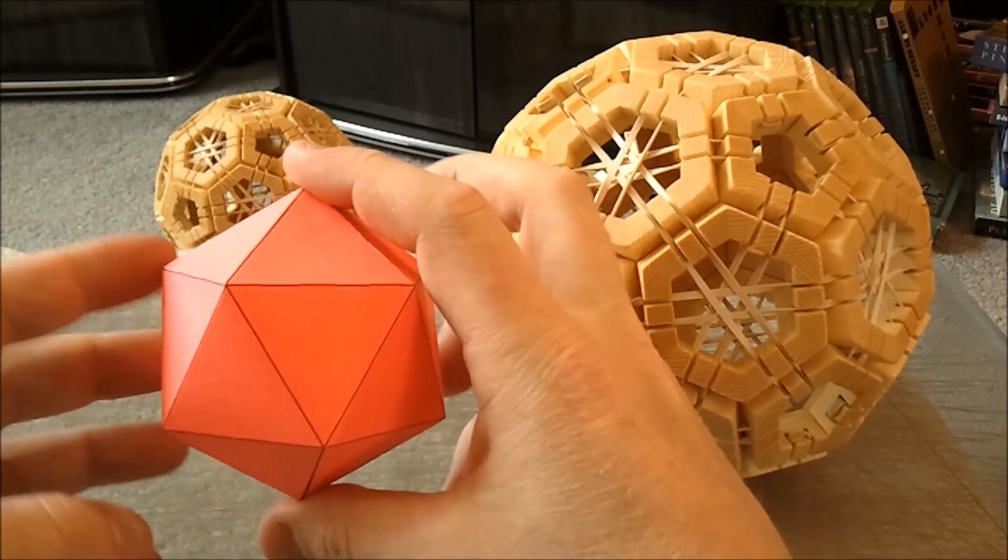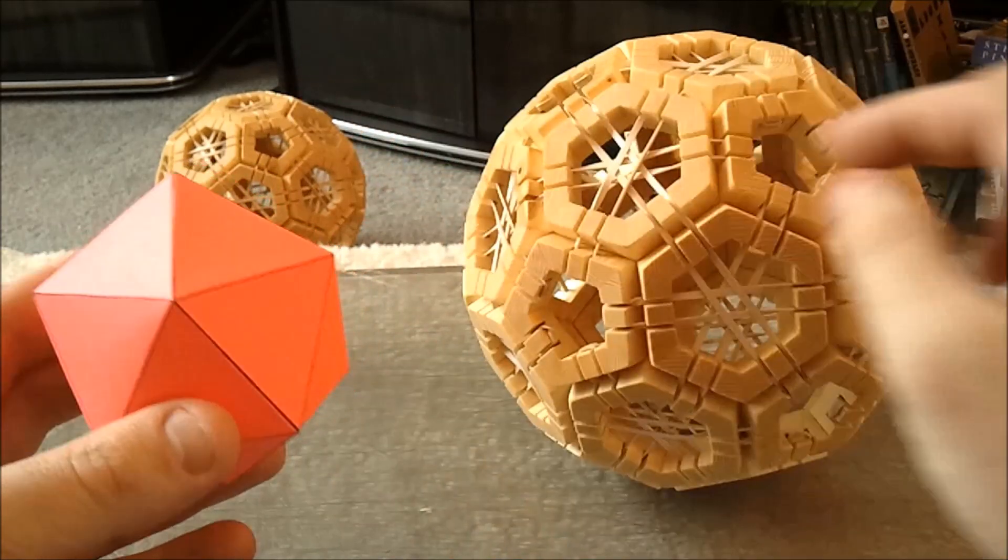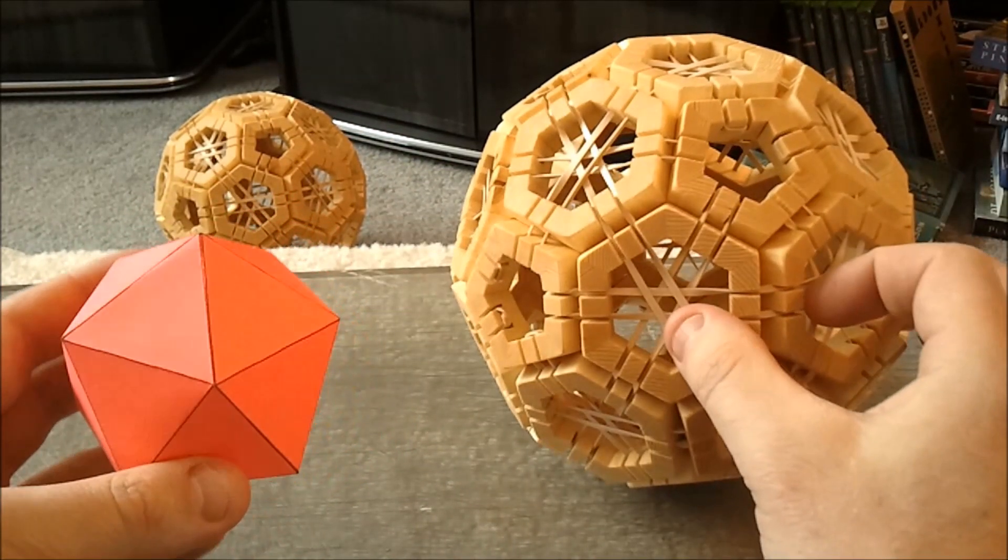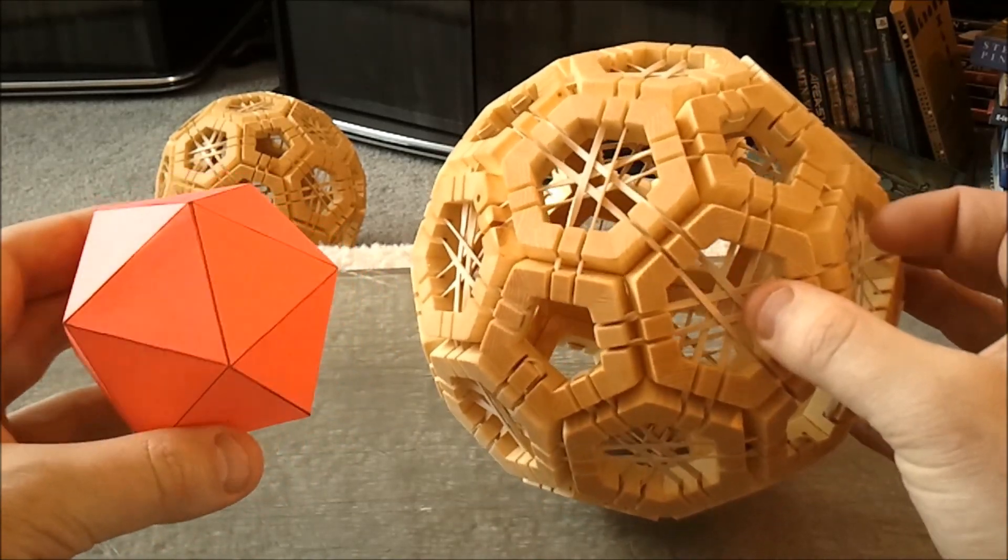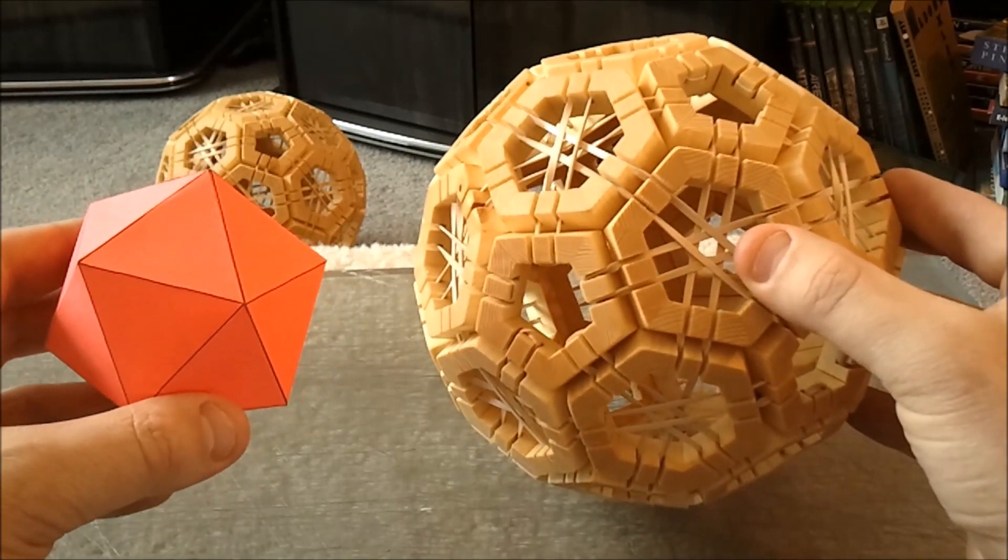This is a normal icosahedron. It has 20 faces, and each of these triangular faces correspond with one of these hexagons on the truncated version. It's a little bit difficult to see at first, but once you get it, it should click.